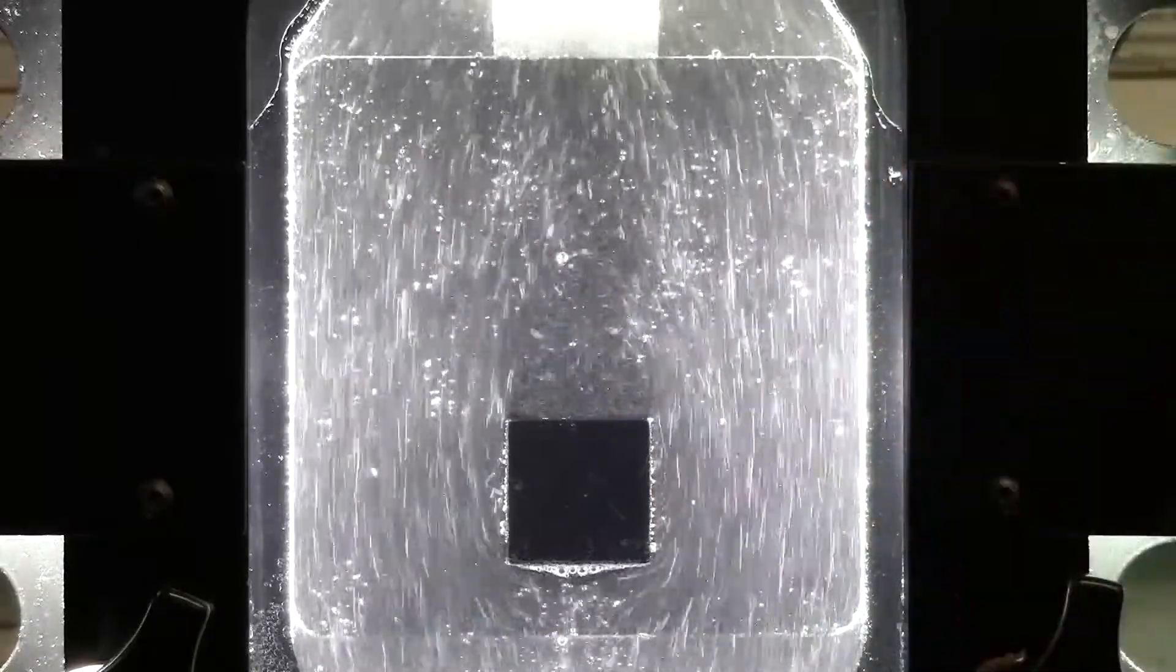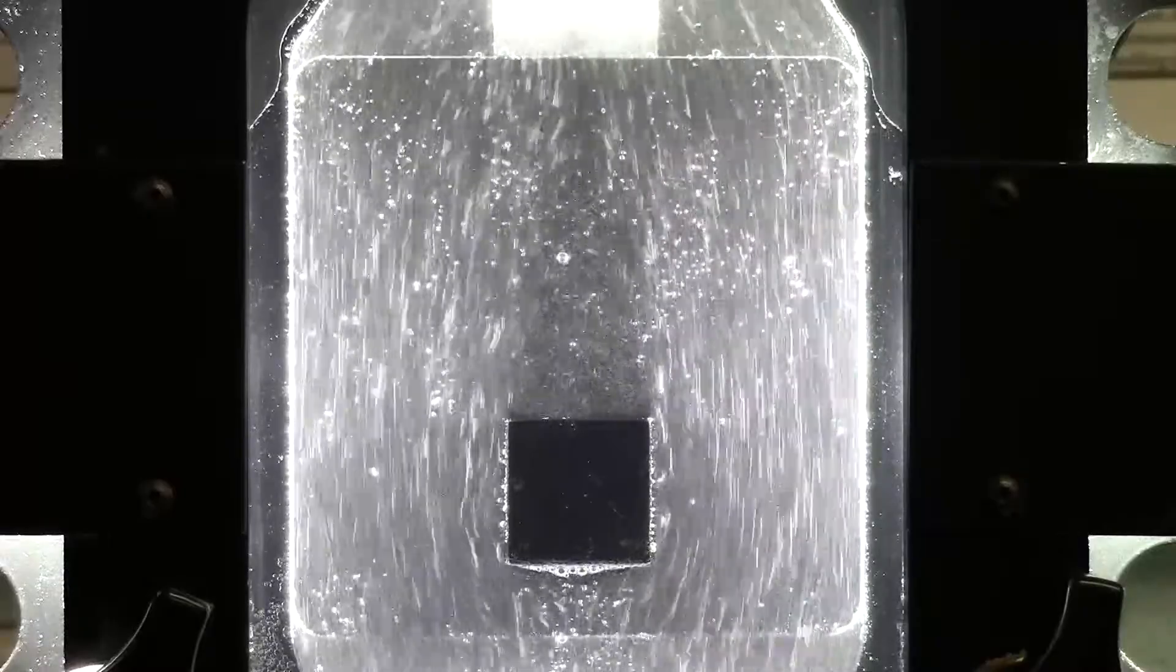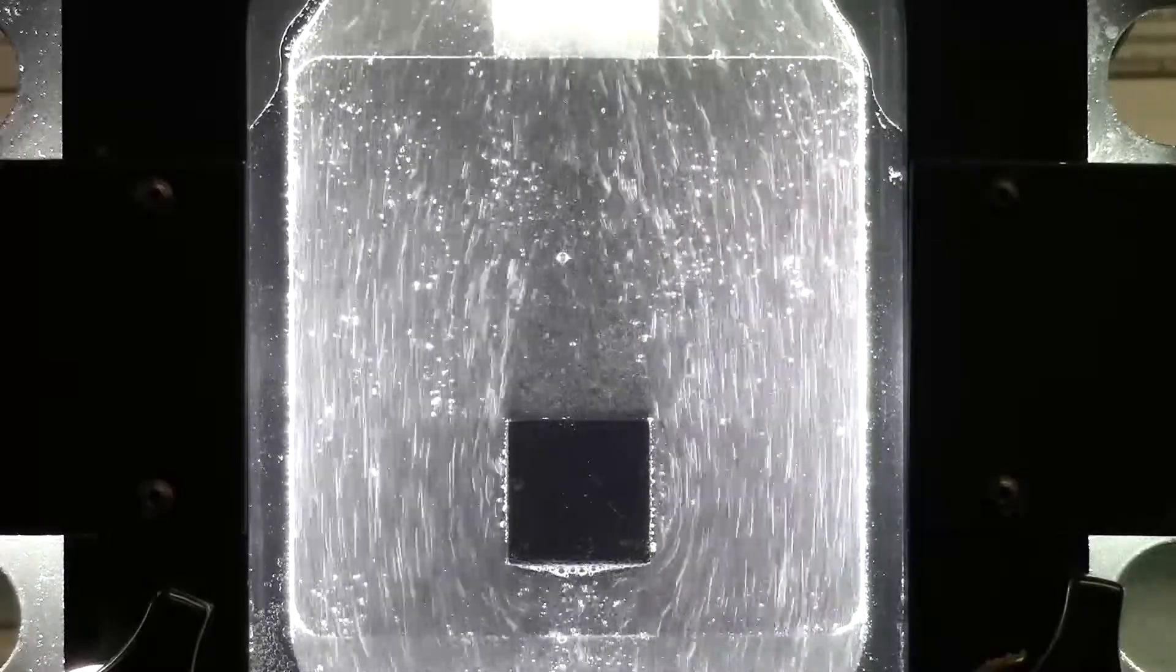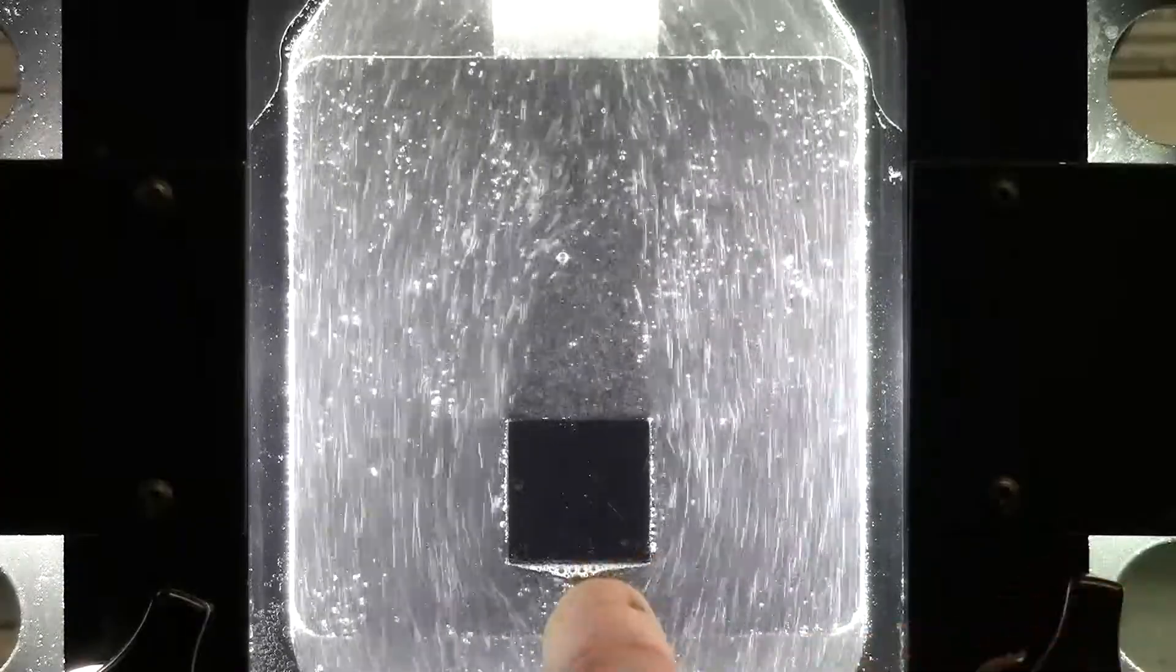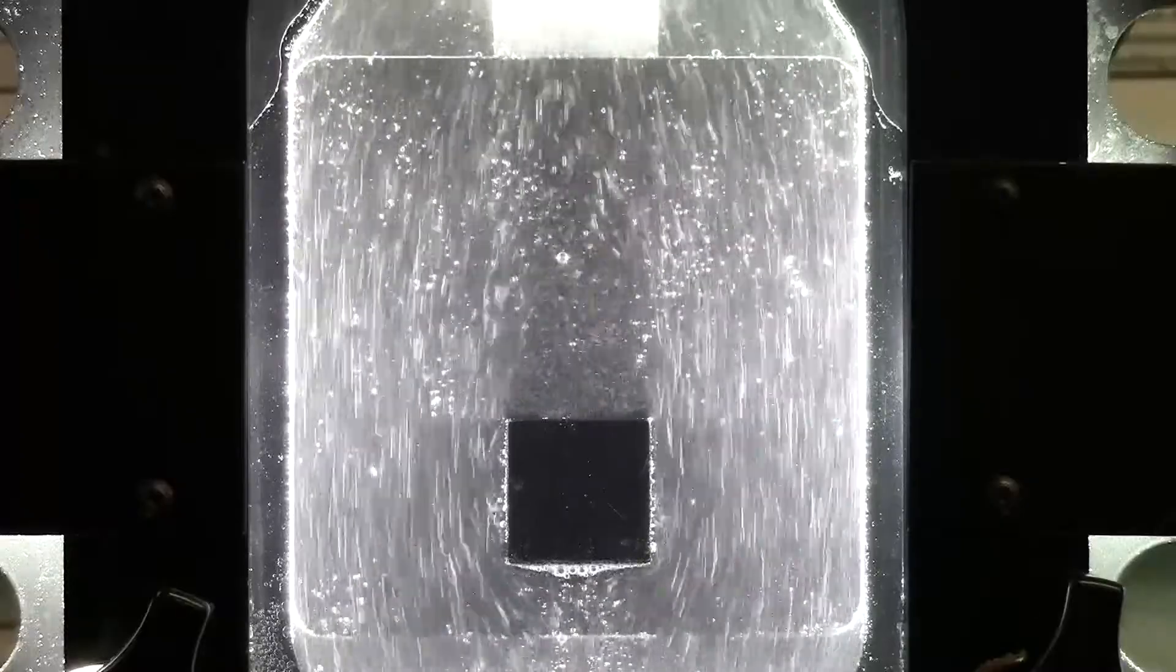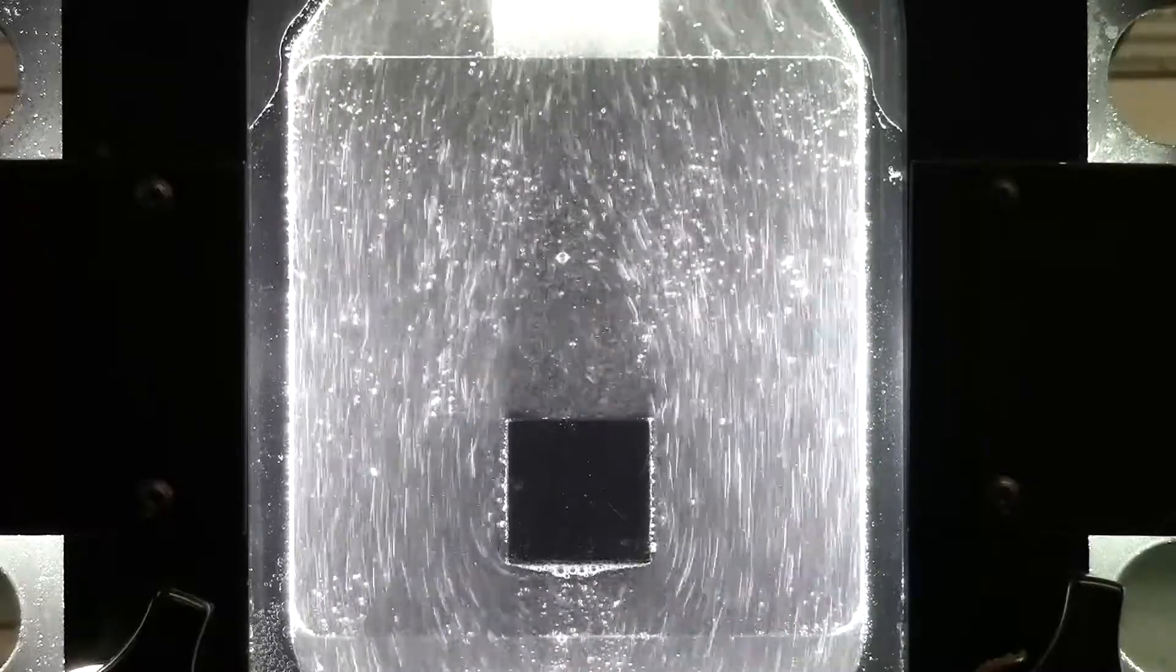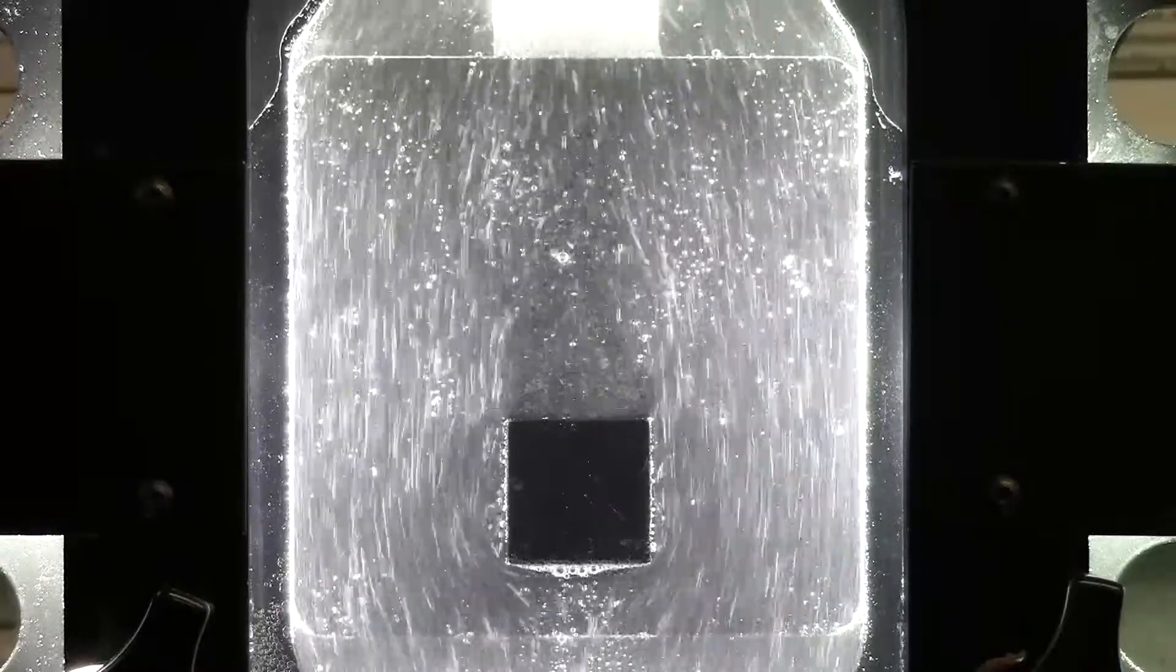But here we also have the stagnation point. The stagnation point is in the middle of the lower side of the square, right here, where water particles hit the square and become stagnant. Here we have low velocity and high pressure.